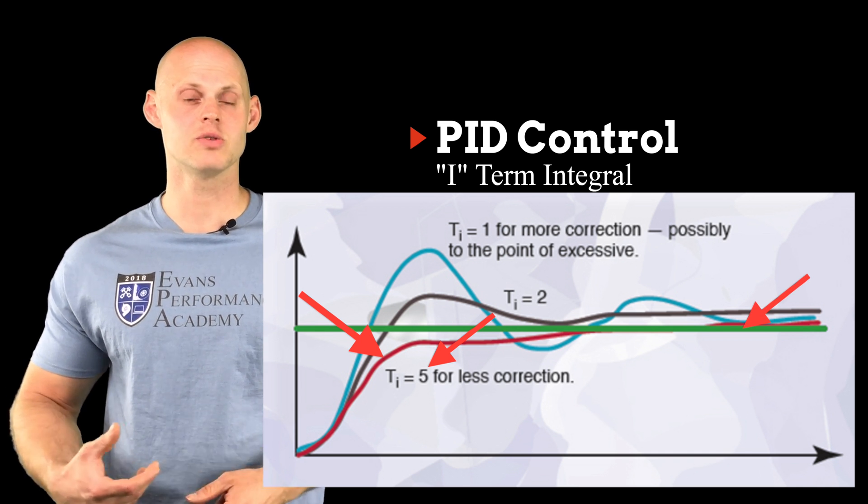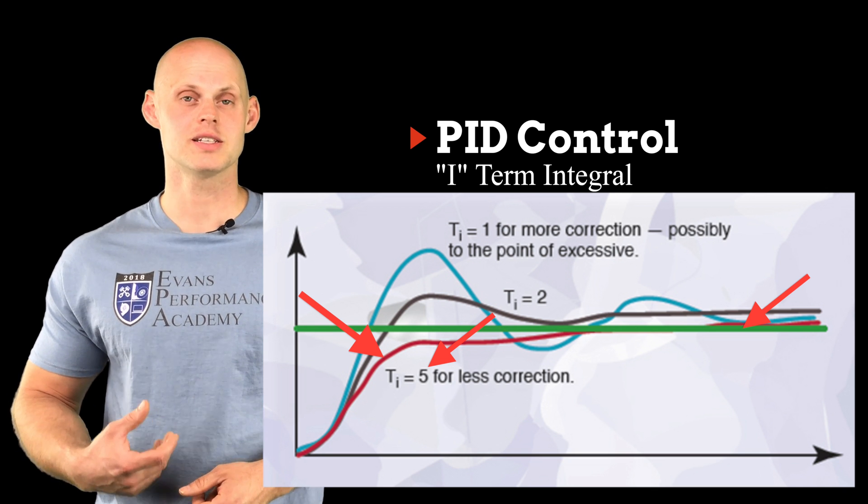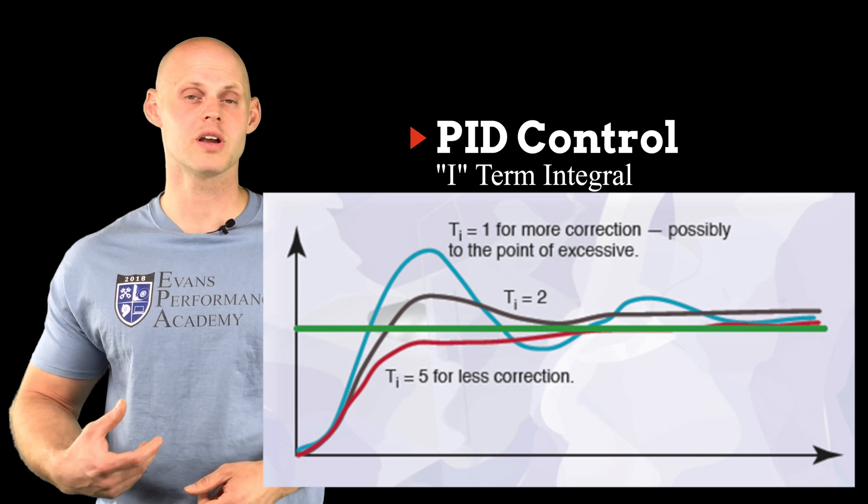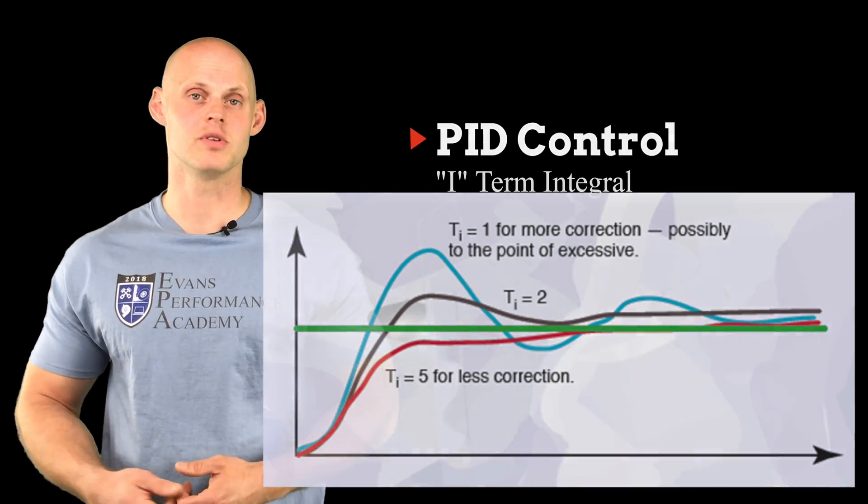So the I again is going to be our long term steady state error correction, and it's going to help us track to whatever we're trying to target. So an example of we have boost, we're going to get rid of a boost oscillation. We're going to be able to have it go right to that target boost level that we want.